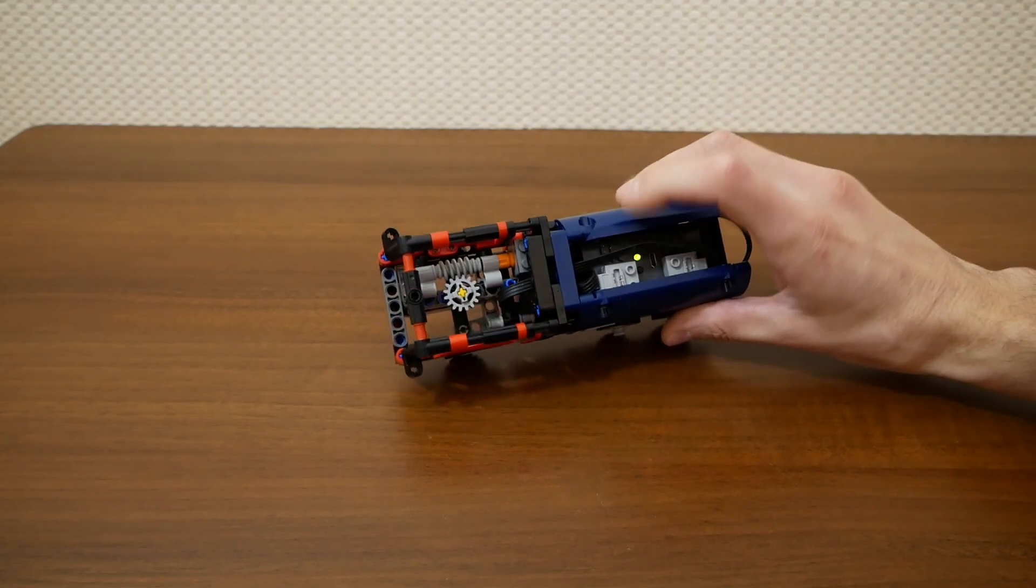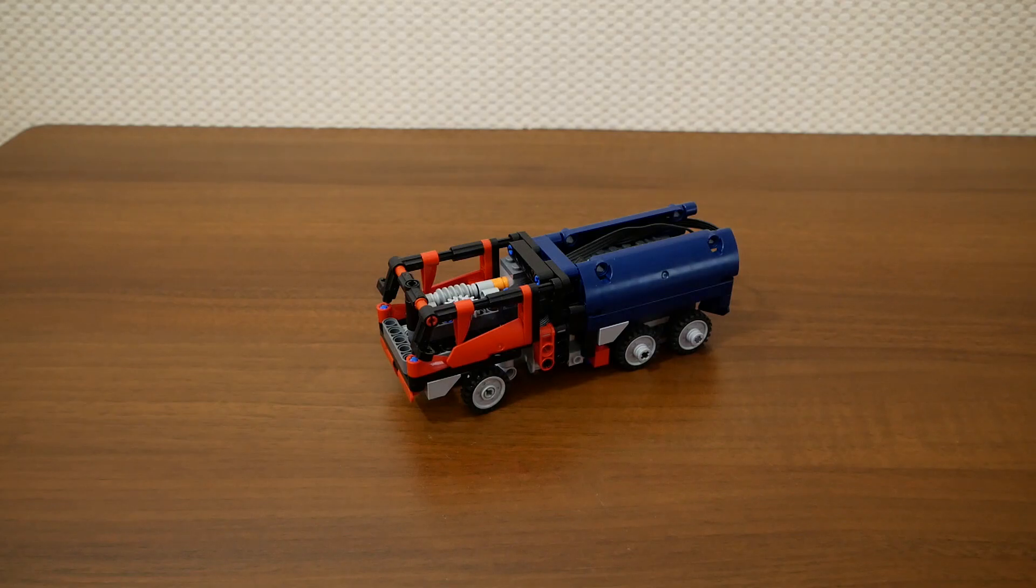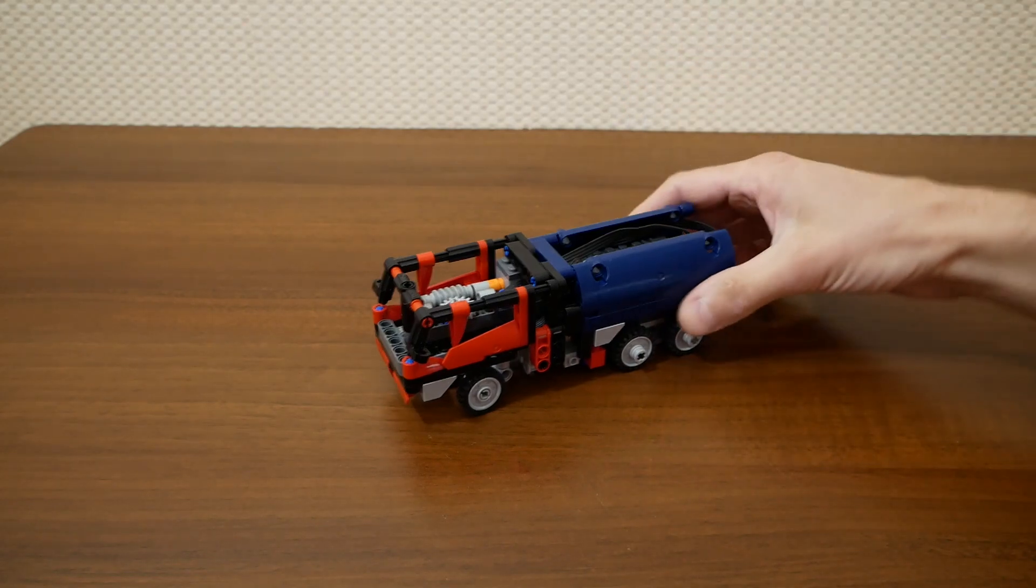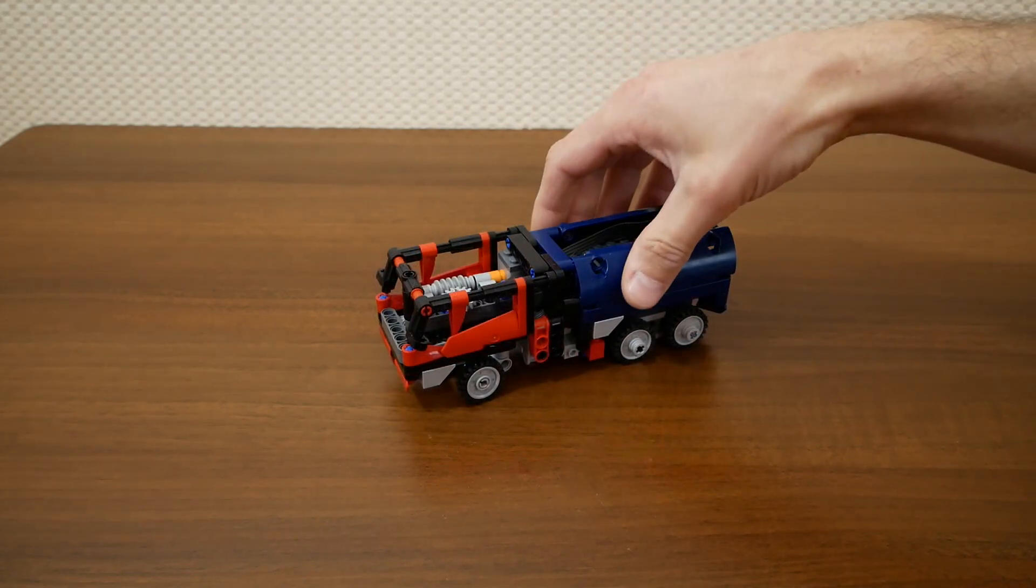Here we have the buoys. This is the reason why the model looks like a truck, to hide the receiver. And here we have two micromotors.